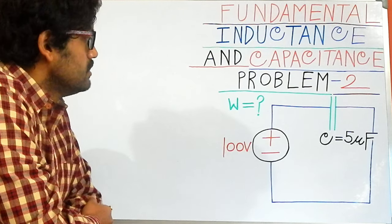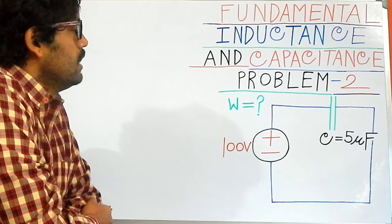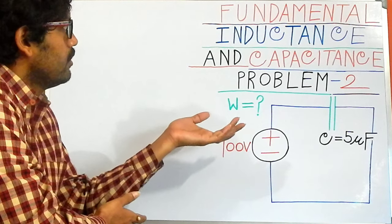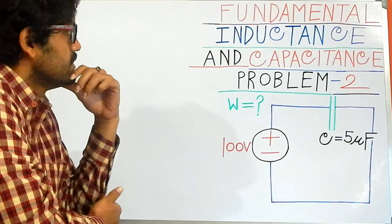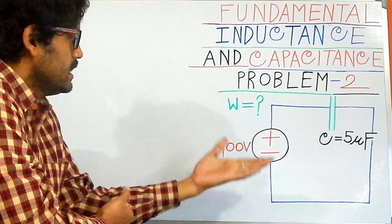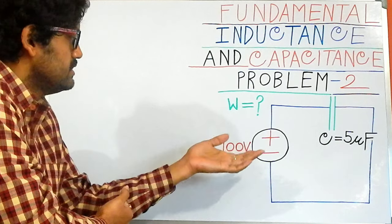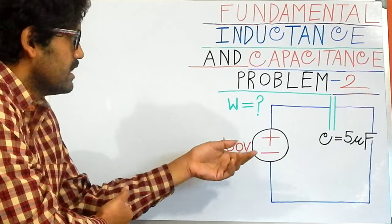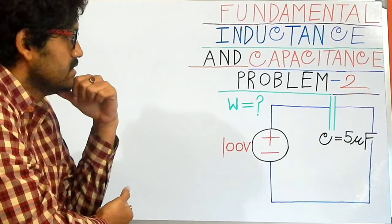Hi, we are Engineering Brothers, and I have chosen our second problem on fundamental inductance and capacitance. Here you can see that a DC voltage source of about 100 volts is connected with our capacitor circuit.